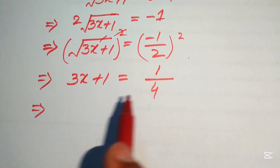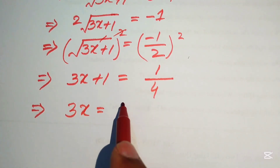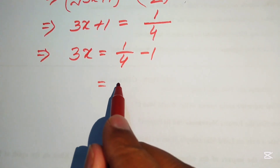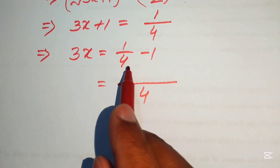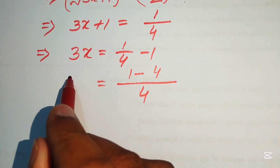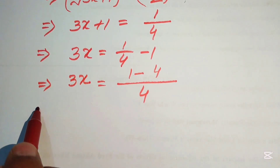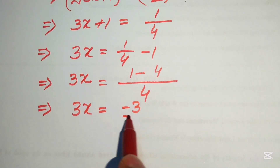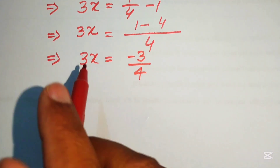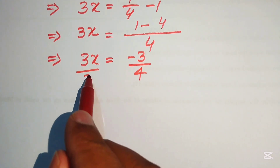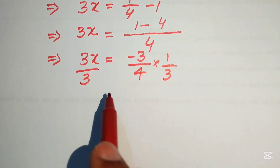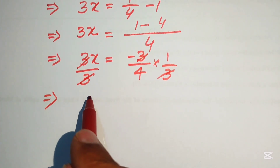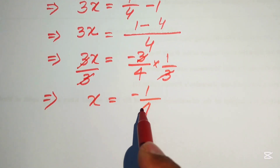After that, we move this plus 1 to the right hand side, so it will be written as 3x equals to 1 over 4 minus 1. We take the LCM on the right hand side; the LCM becomes 4 and we get 1 minus 4 over 4. Simplifying, 1 minus 4 equals minus 3, so 3x equals minus 3 over 4. To remove the 3 from the left hand side, we divide both sides by 3, and the 3s cancel, giving x equals minus 1 over 4.